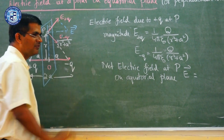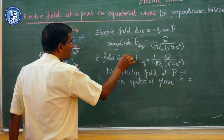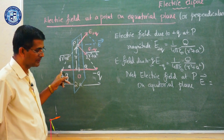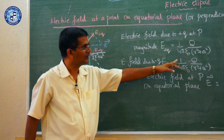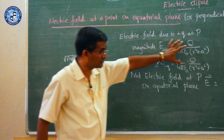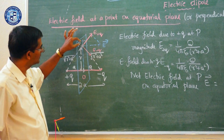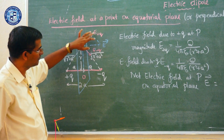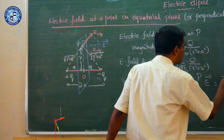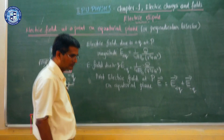The magnitude of the electric field at point P due to +q is: E₊q = (1/4πε₀) · q / (r² + a²). The magnitude of the electric field due to -q is: E₋q = (1/4πε₀) · q / (r² + a²). The magnitudes are the same, but the directions are different — keep this in mind. Now I have two vectors, E₊q and E₋q, producing fields at point P, and I want to find the net electric field, which is the vector sum of both.